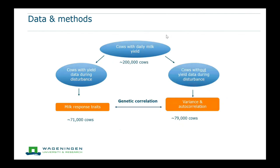We then estimated genetic correlations between these new herd disturbance traits and the variance and autocorrelation resilience indicators defined earlier, to see if variance and autocorrelation were related to how much a cow was affected by the disturbance and how quickly she recovered. We took variance and autocorrelation only for cows that were not also in the disturbance group, to avoid a direct association.